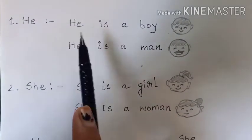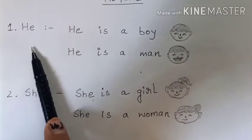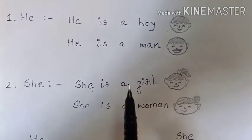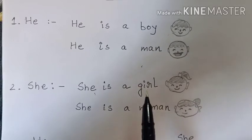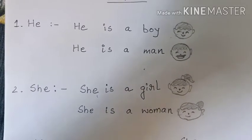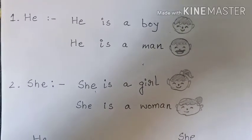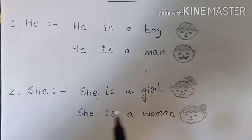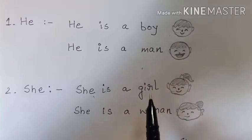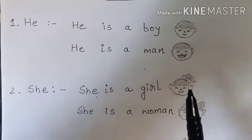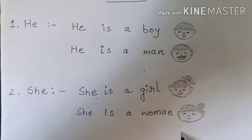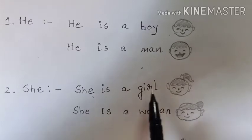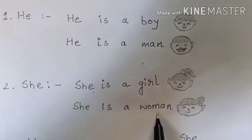We always use 'she' before a girl, woman, mother, grandmother, and queen. 'She' is always used before feminine gender, before females. For example: she is a girl, she is a woman.